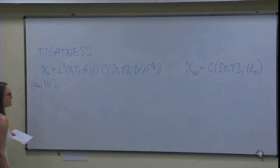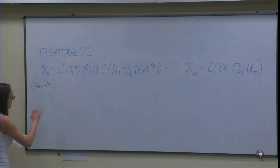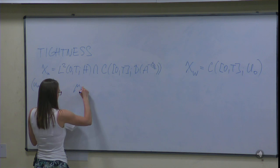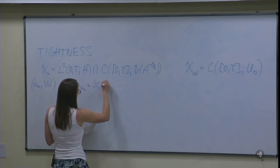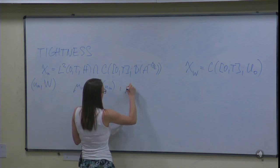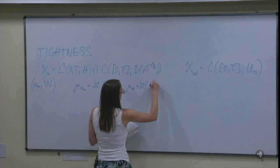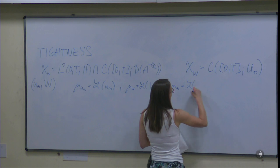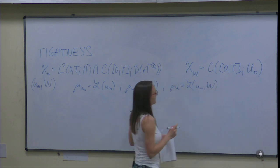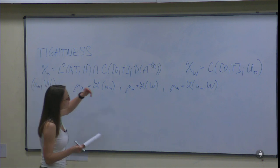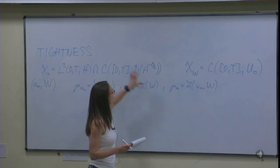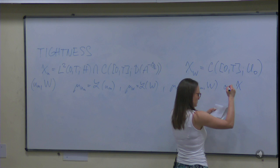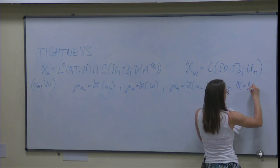I need some more notation. I denote by μ_{U_n} the law of U_n, by μ_W the law of W, and by μ_n the joint law of the couple (U_n, W). My goal is to prove tightness of this family of measures on the product space, which is a measure on χ = X_u × X_w.